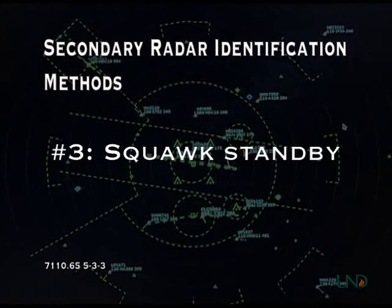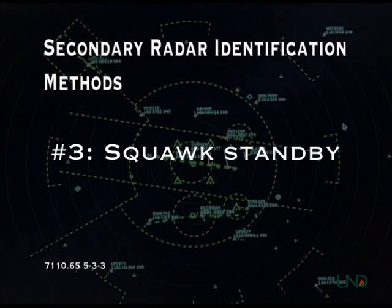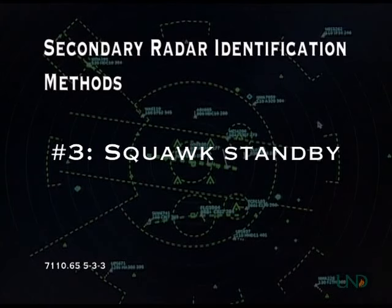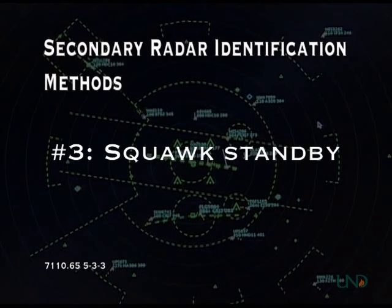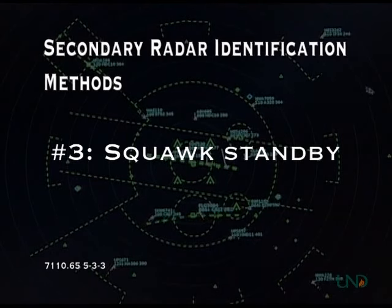The third secondary method is to have the pilot squawk standby. On your radar display, you'll notice that the secondary information will disappear as the pilot changes the transponder to standby mode. Then instruct the pilot to squawk normal and observe on the radar display that the secondary information returns.